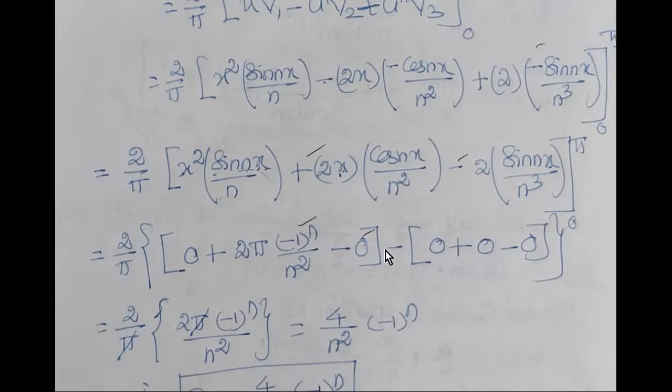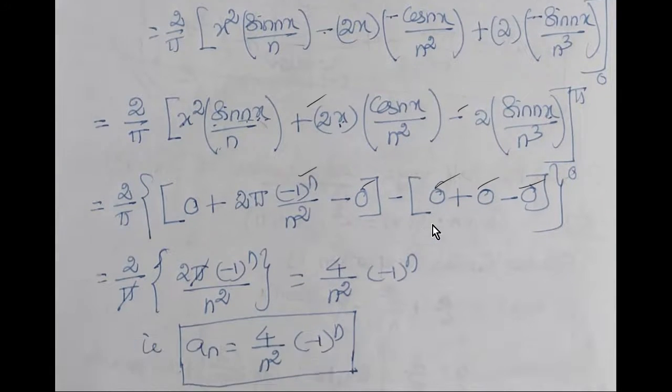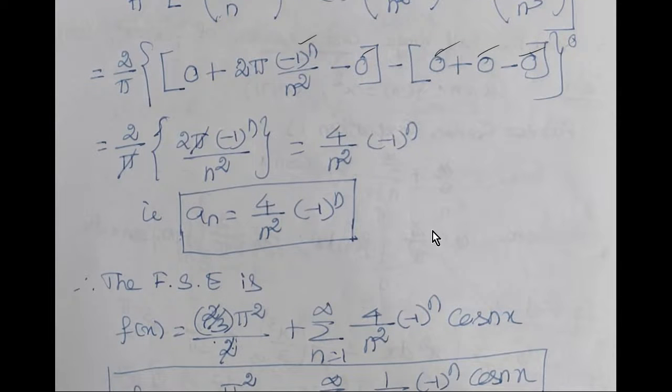The lower limit is 0, so everything is 0. The other term is 2 by pi times 2 pi minus 1 to the power n by n squared. 2 into 4 minus 1 to the power n by n squared. Plus minus 1 to the power n by n squared. So an equals 4 by n squared minus 1 to the power n.